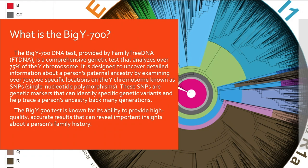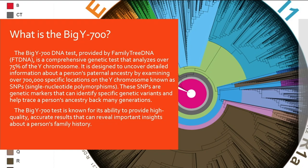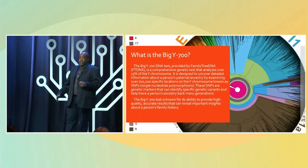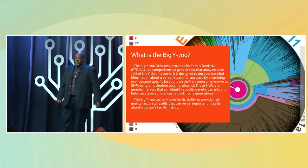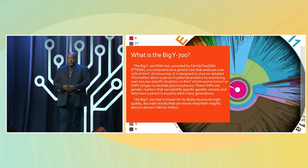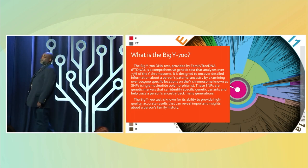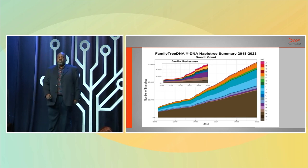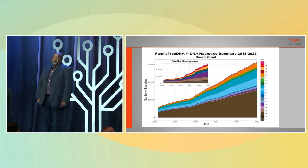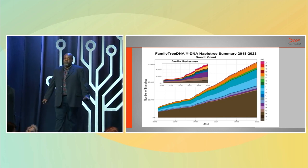The Big Y700, as many of you know, is like the Cadillac of Y-DNA tests. It sequences large amounts of mutations throughout the genome. You test positive for some and negative for some. We're able to look at those SNP mutations and provide a time estimate for which you may match other people who've done a similar test. The Big Y test is known for its ability to provide high quality and accurate results that can reveal important insights about a person's family history.